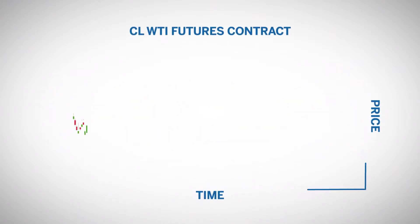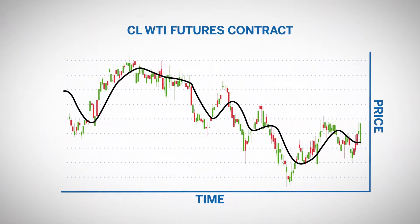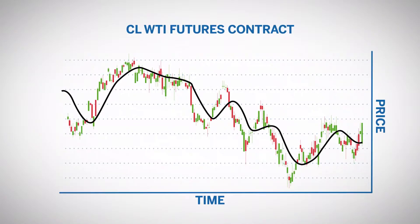For example, a 14-day moving average of the CL WTI futures contract would be the average closing price of the CL contract over the last 14 days.